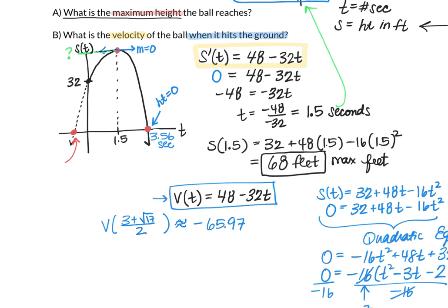Let's talk about why a negative makes sense. Graphically, a negative should make sense because if we look at the slope of the tangent line at the point where the ball hits the ground at the x-intercept, the tangent line is very steep and has a negative slope. The negative also makes sense in context because the ball is on its way down, so we have that negative direction. When doing velocity, we're thinking about change in position over change in time. Position was measured in feet and time in seconds, so this is approximately -65.97 feet per second.